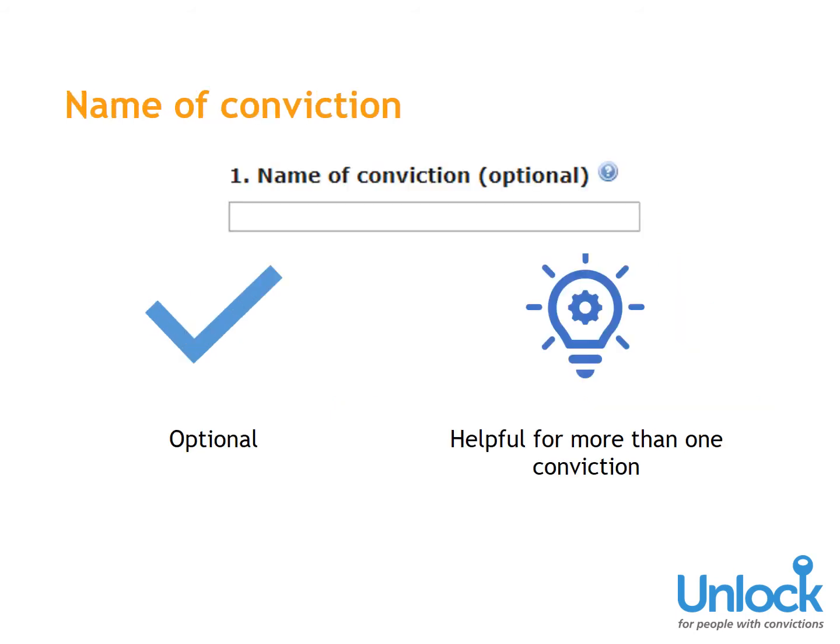Name of Conviction: You don't have to put anything in this box — it's optional. However, if you're inputting more than one conviction, it can help you identify each individual conviction on the Results page.